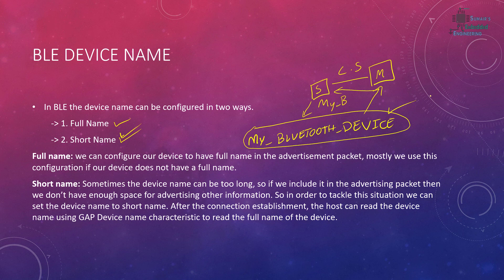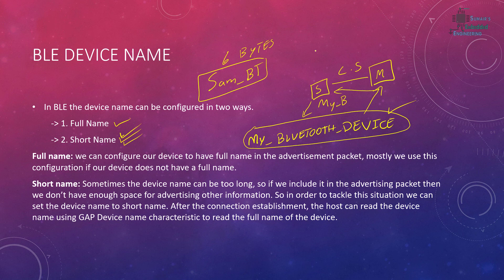If you just have six or seven characters like in my case — 'sam bt', which is one, two, three, four, five, six characters, so six bytes of data — then in the advertisement packet we have enough space available for our other data.